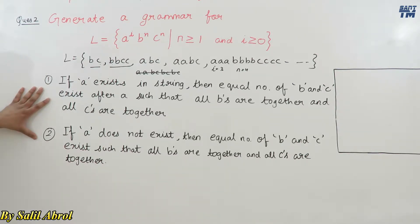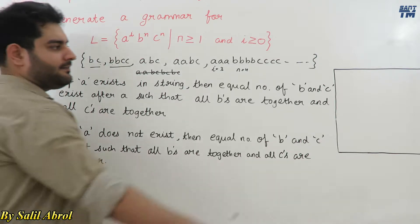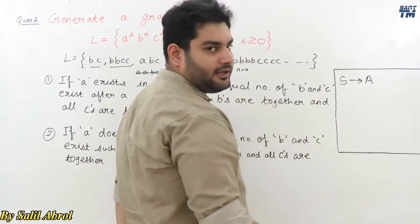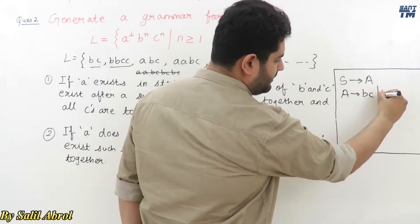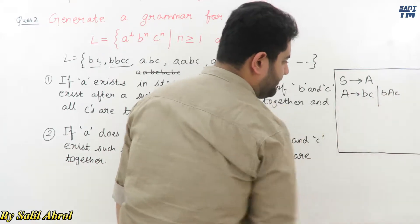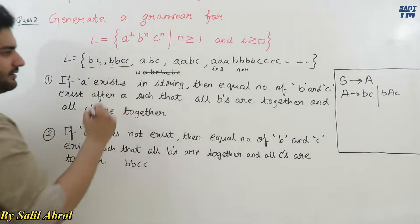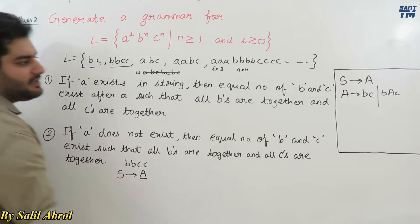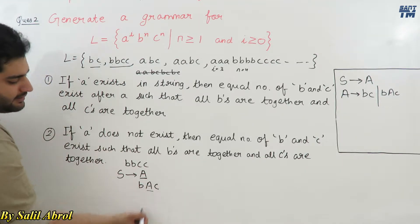To generate the grammar, our major goal is to derive production rules. The first production rule is S → A, where A is a non-terminal. A can be replaced using 'bc' or 'bAc'. Consider generating the string bbcc: we start with S → A, and replace A using A → bAc.